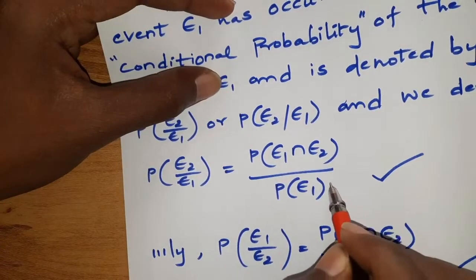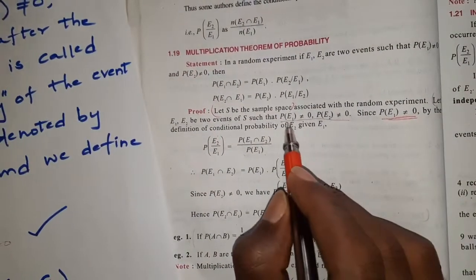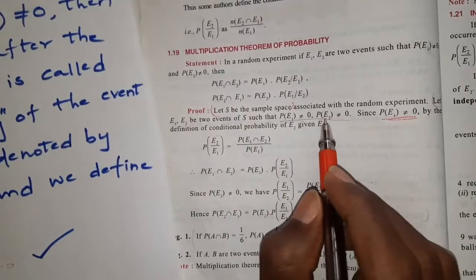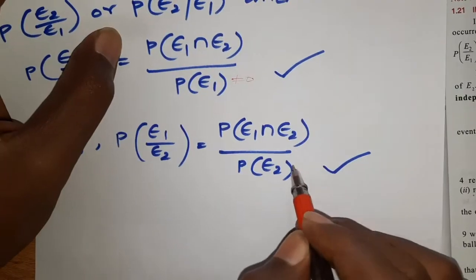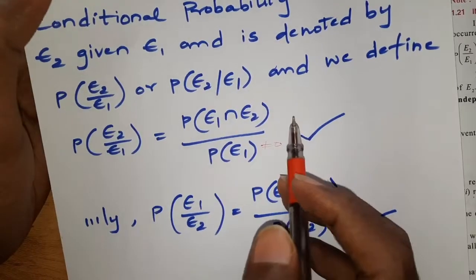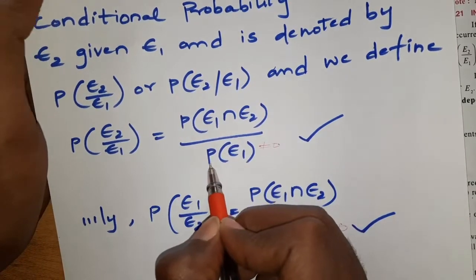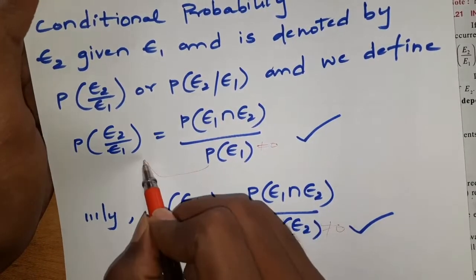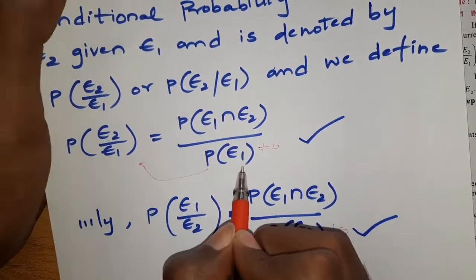So, when the denominator is not equal to 0, we have P(E1) not equal to 0 and P(E2) not equal to 0. Therefore, P(E1 ∩ E2) is derived, and P(E2) = P(E2|E1) · P(E1).